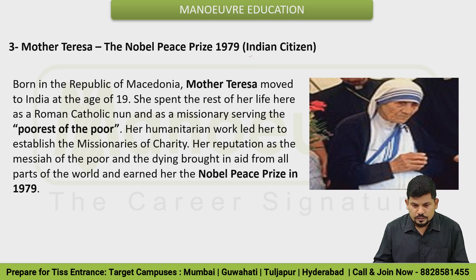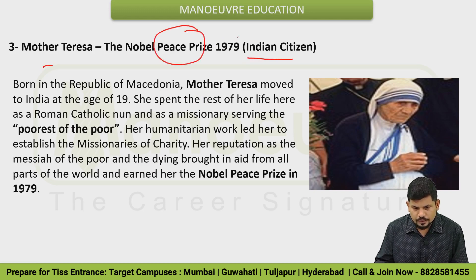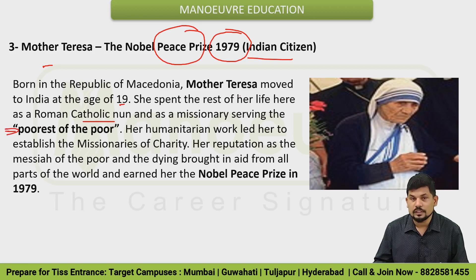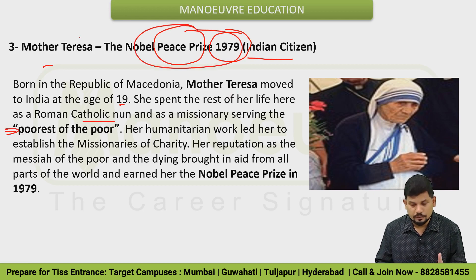The next Indian citizen is Mother Teresa. She received the Nobel Peace Prize in 1979 for social work. Born in the Republic of Macedonia, Mother Teresa moved to India at the age of 19 and spent the rest of her life here as a Roman Catholic nun and missionary, serving the poorest of the poor. The Nobel Peace Prize in 1979 was given for this social work — remember this.